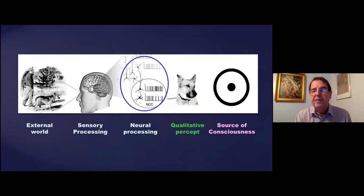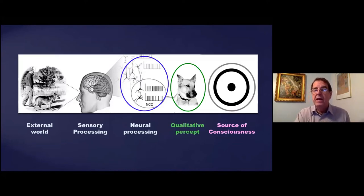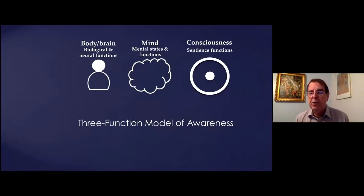So we have three main functions. We have physical functions represented in the brain by neural processing. We have the qualitative functions of the mind, mental processing, cognitive processing. And we have the functions of consciousness proper. The actual ability to experience and the sense of existence. These belong to consciousness proper and cannot be found located within the neural activity or the cognitive activity. So this gives us a kind of three function model of awareness. The body-brain with its biological and neurological functions, the mind with its mental states and cognitive functions, and consciousness which has its sentience functions. So body-brain complex, mind, and consciousness.